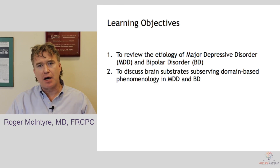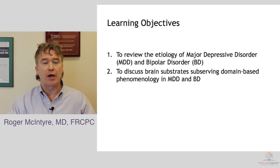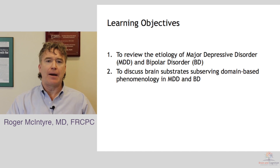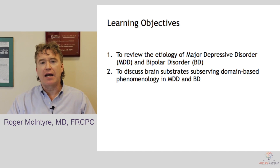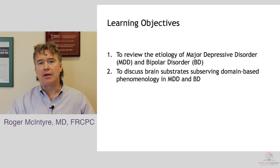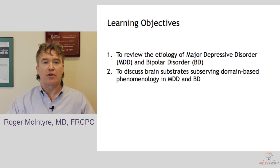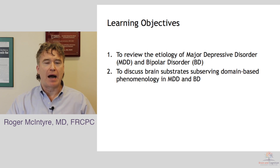The objectives of this module are to review the etiology of major depressive disorder and bipolar disorder. We'll be taking what I would refer to as a transomic approach, starting with the genetic architecture and moving upward to look at a variety of factors that we now believe are playing some type of etiologic role in individuals who suffer from one of these two conditions. We'll spend much of the time discussing the brain substrates that are implicated as subserving — that is, underlying — the phenomenology of major depressive disorder and bipolar disorder.